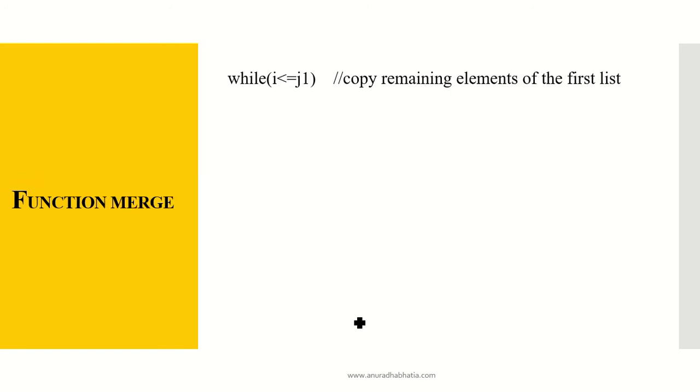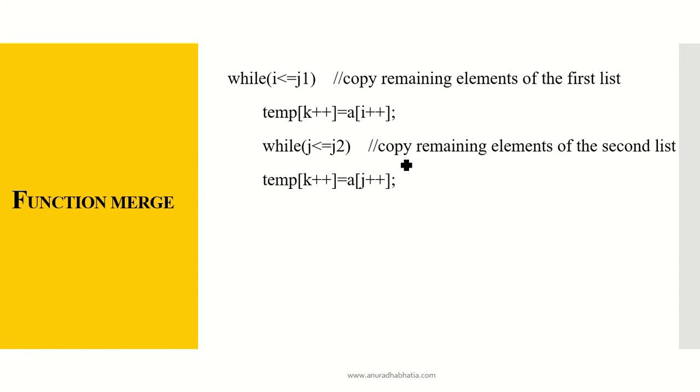While i is less than j1, that is copying the remaining elements from the first list, temp[k++] is equal to a[i++]. While j is less than or equal to j2, that is copy the remaining element of the second list, once the first list is copied. temp[k++] is equal to a[j++].